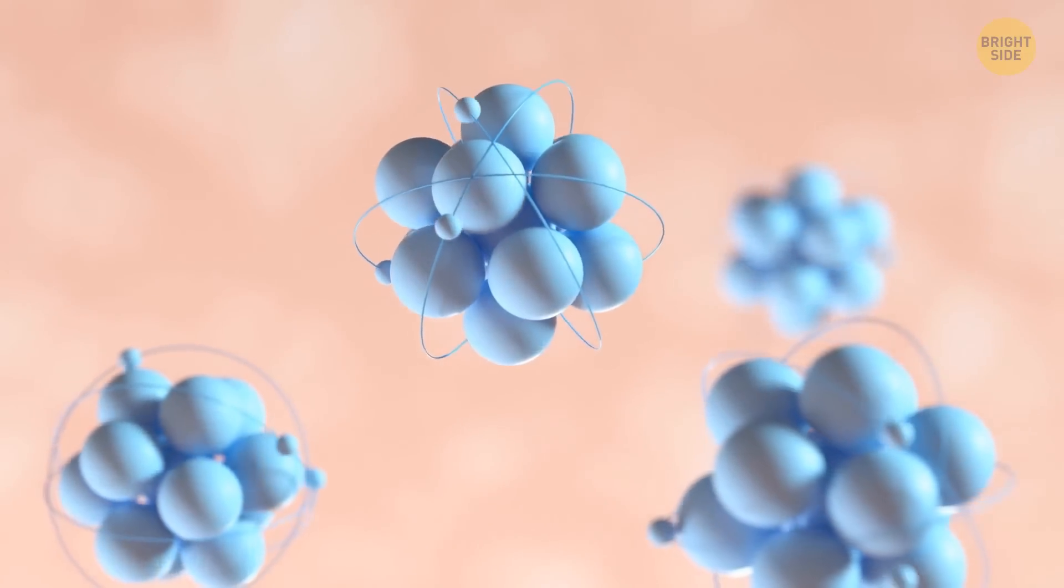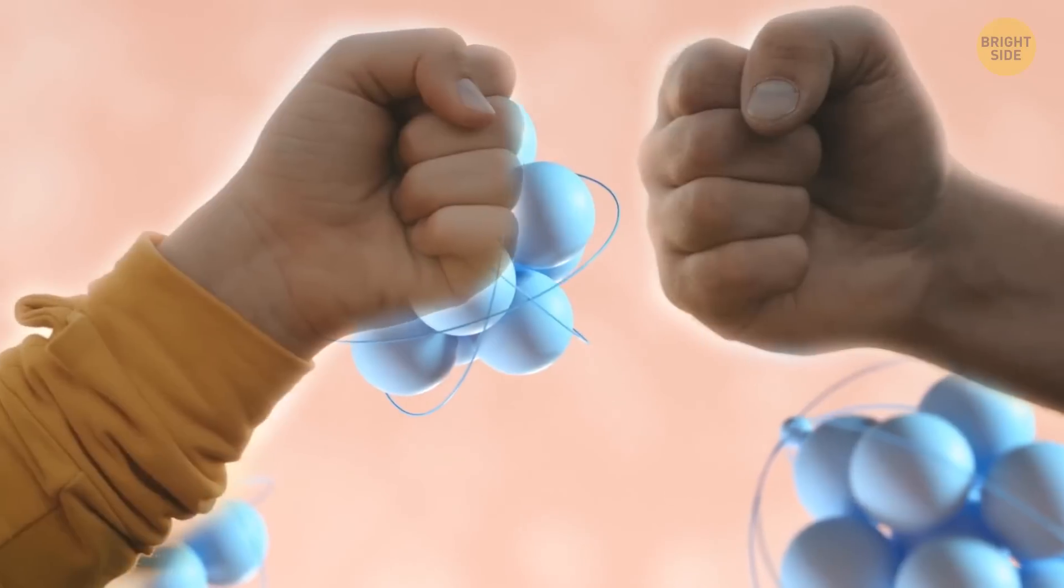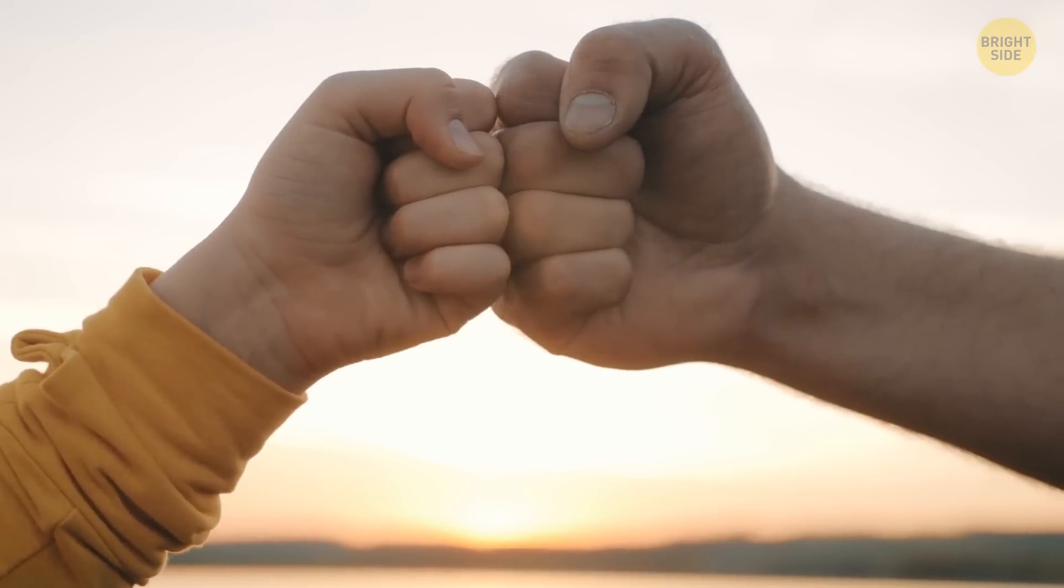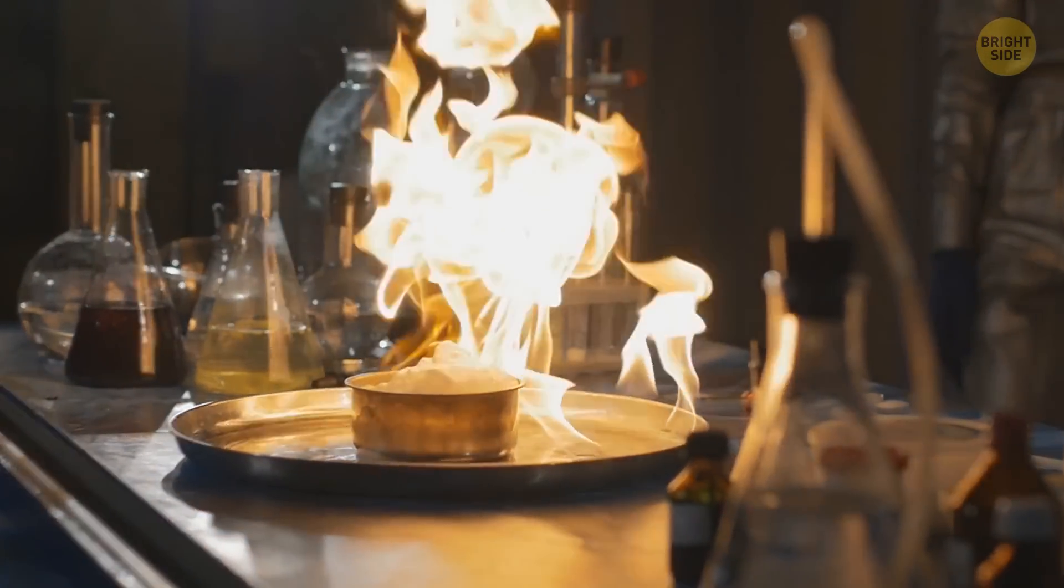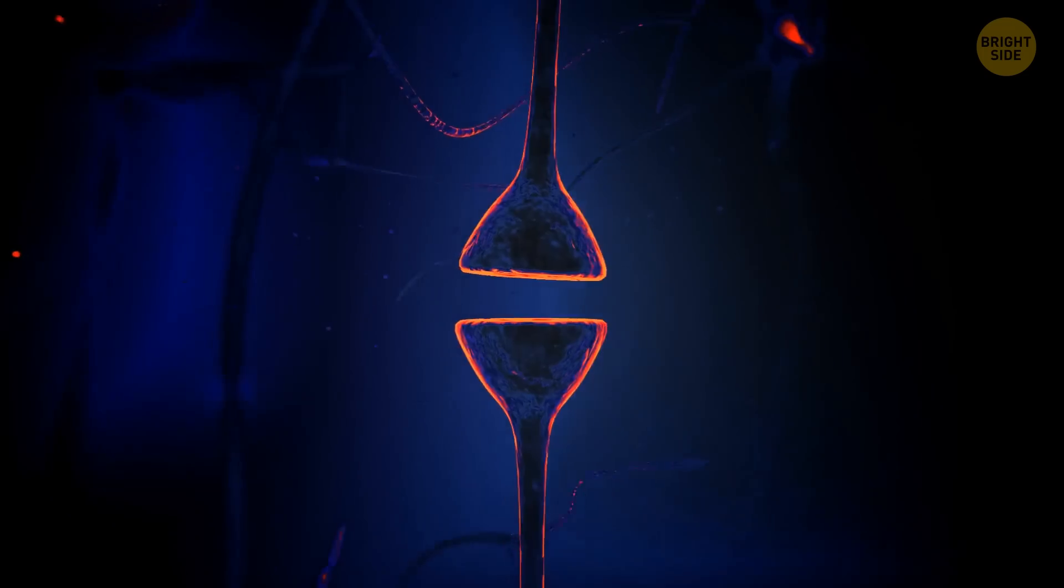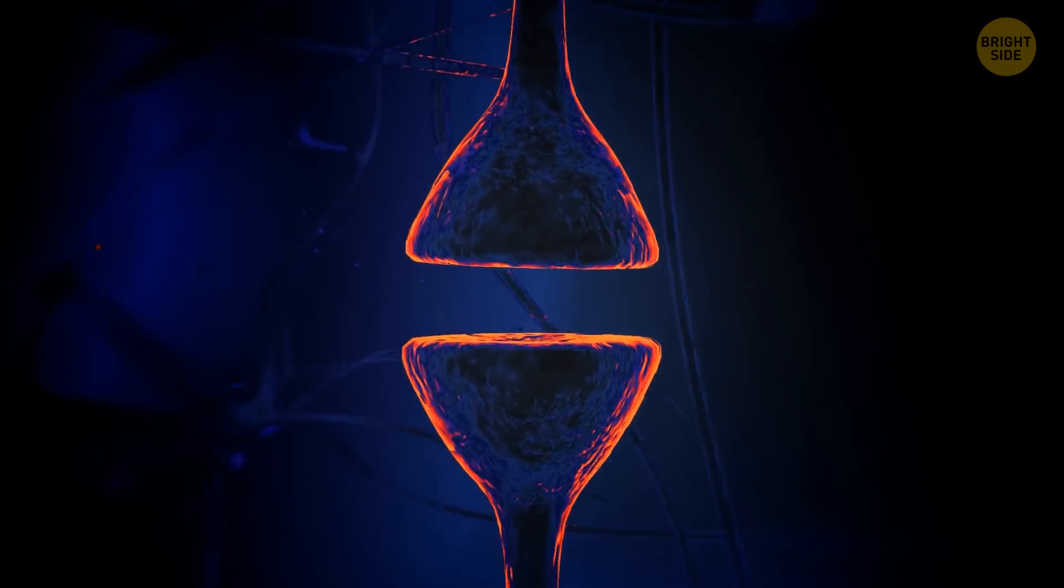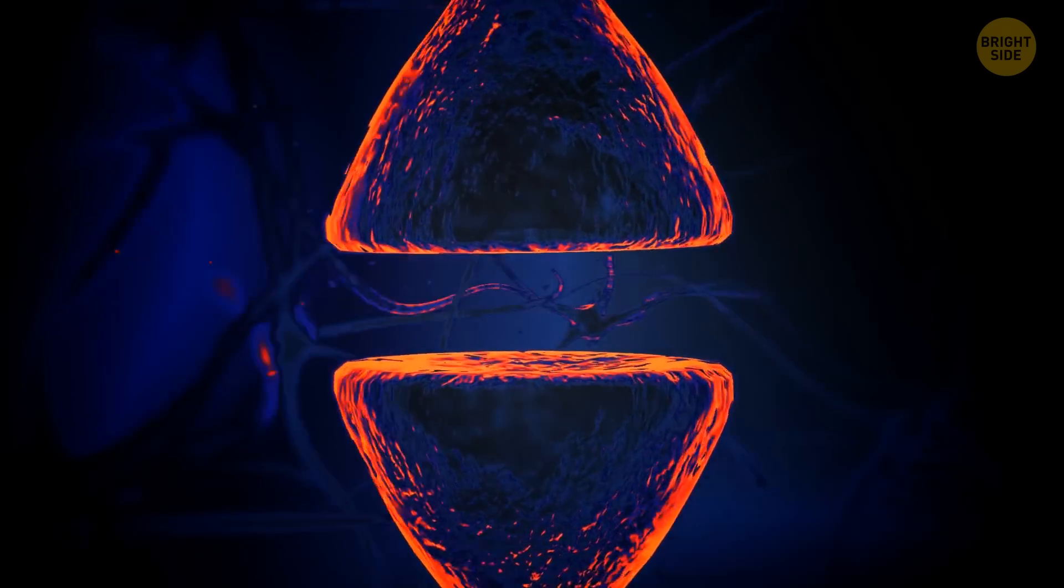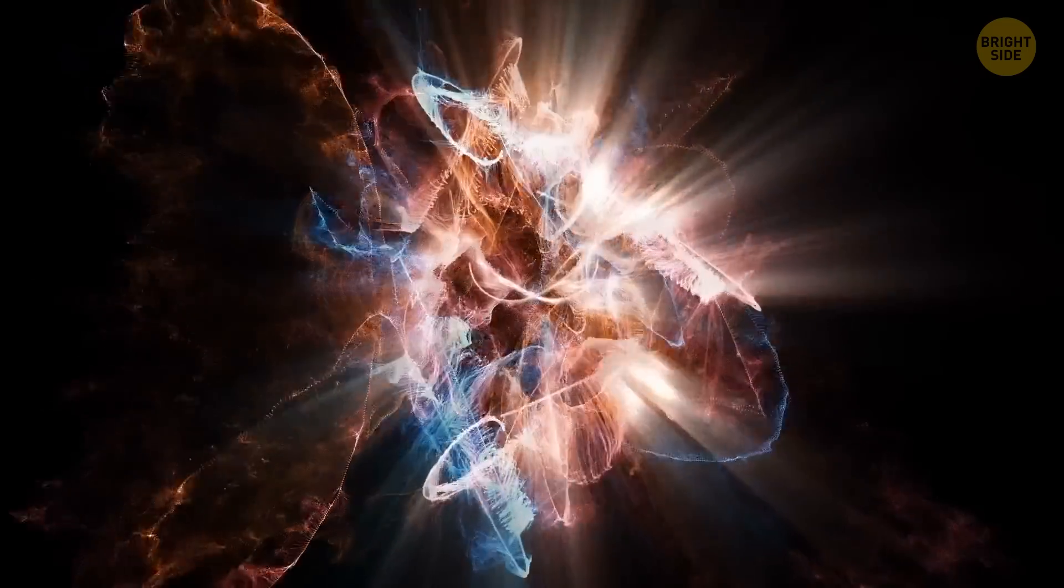Normally, quarks stick together tightly inside particles like protons and neutrons. It's like they're holding hands and can't move around much. But when things get super hot or under a lot of pressure, something interesting happens. The force that holds the quarks together, called the strong force, becomes weaker. It's like their grip loosens. And suddenly, the quarks can move around more freely. This is when QCD matter appears.